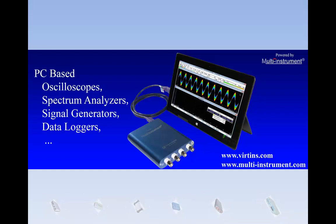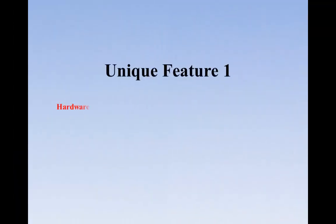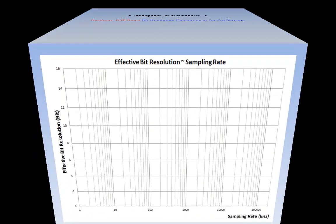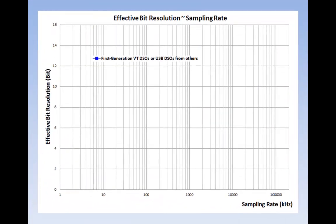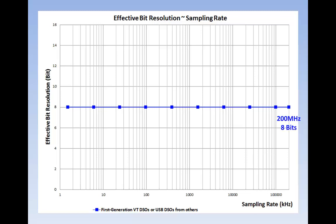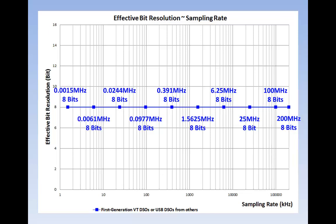Unique Feature 1: Hardware DSP-based bit resolution enhancement for oscilloscope. The first-generation VT DSOs and those USB DSOs from other manufacturers generally have a fixed bit resolution which does not change with the sampling rate. Fixed 8-bit oscilloscopes are still dominating the market. This probably explains why oscilloscopes are still not considered as accurate tools for voltage measurement.